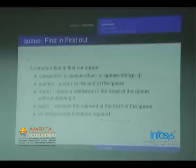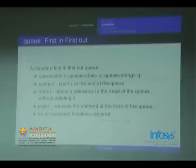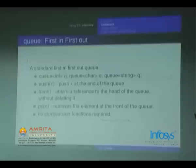Next is queue. Syntax: queue<DataType> q. push(x) pushes x to the end of the queue. front() obtains a reference to the head without deleting it. pop() deletes the front. Queue doesn't require a comparison function like set or map because it doesn't need operator< to push.